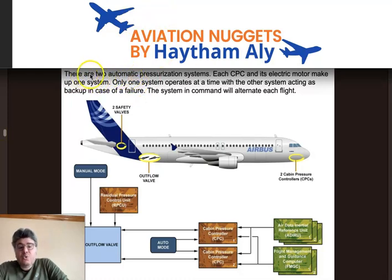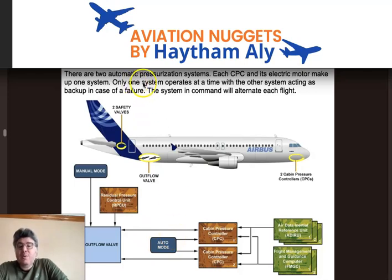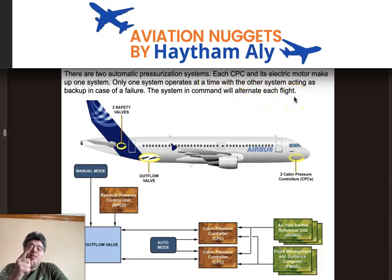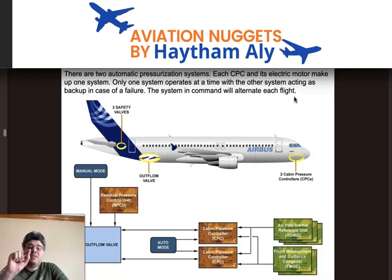There are two automatic pressurization systems. Each CPC and its electric motor make up one system. Only one system operates at a time, with the other acting as a backup in case of failure. The two systems alternate in command each flight: system one is CPC1 with motor one, and system two is CPC2 with motor two.